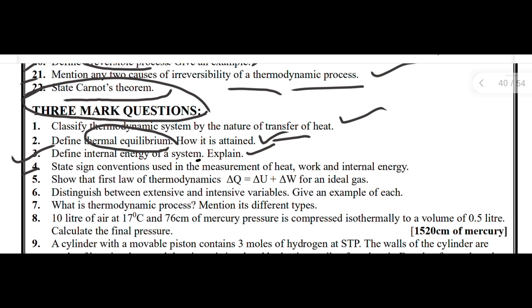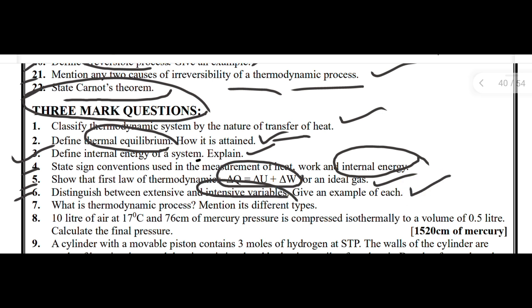Next: state the sign convention used in the measurement of heat, work, and internal energy. Show that the first law of thermodynamics ΔQ = ΔU + ΔW for an ideal gas. Distinguish between extensive and intensive variables, giving an example for each. Next: what is a thermodynamic process? Mention its different types. These are the possible important three-mark type questions.